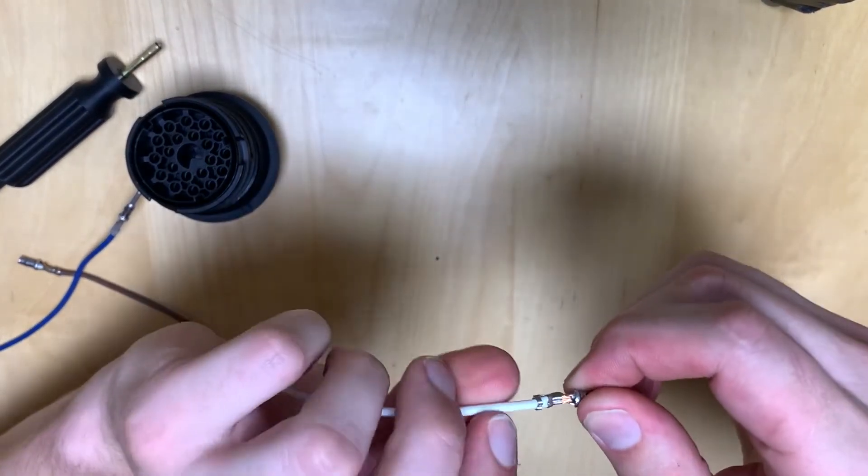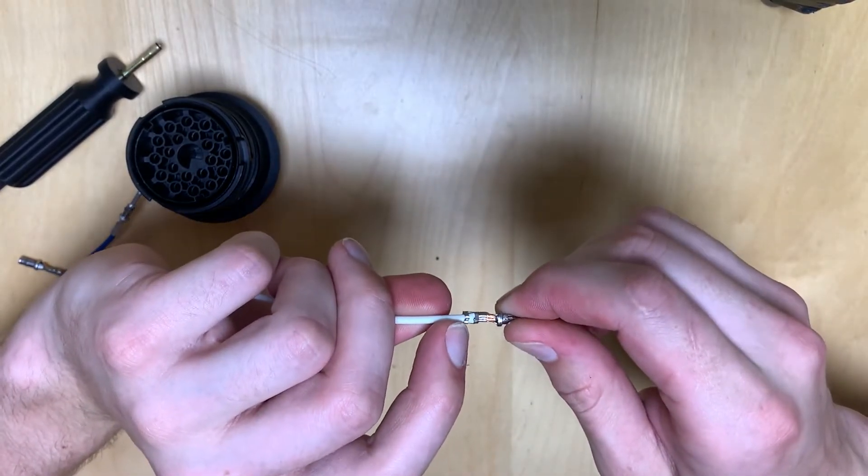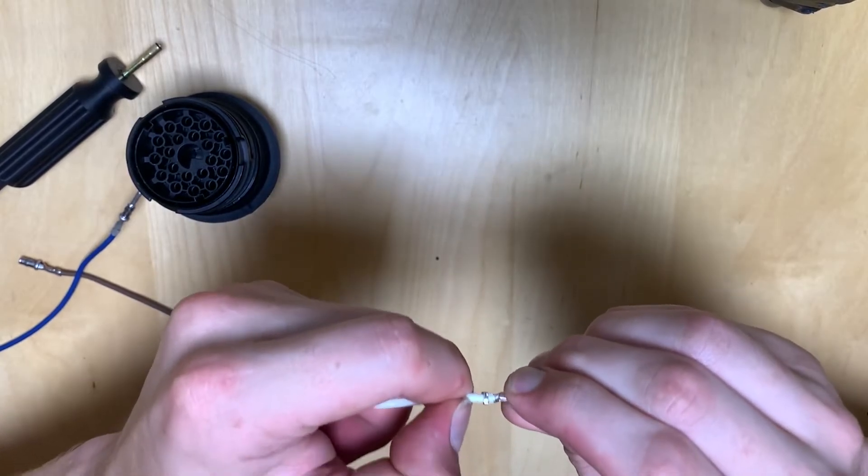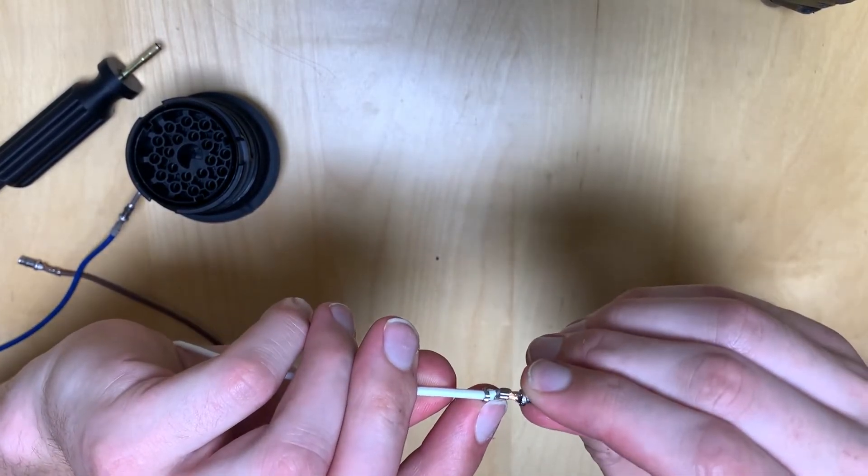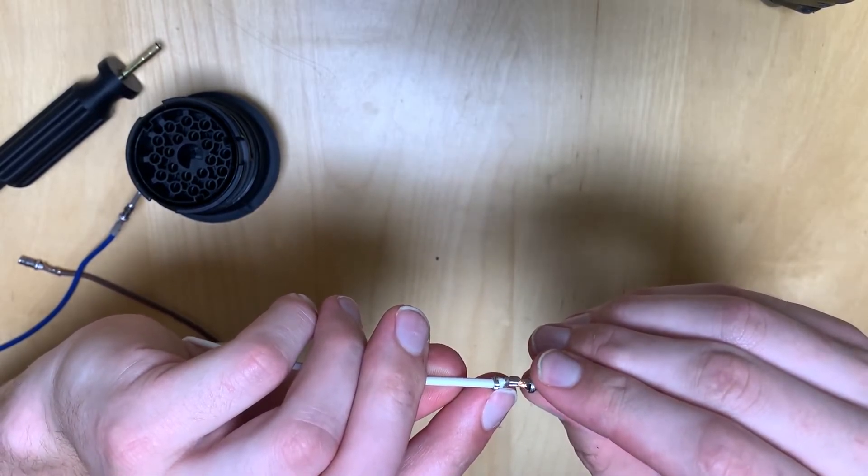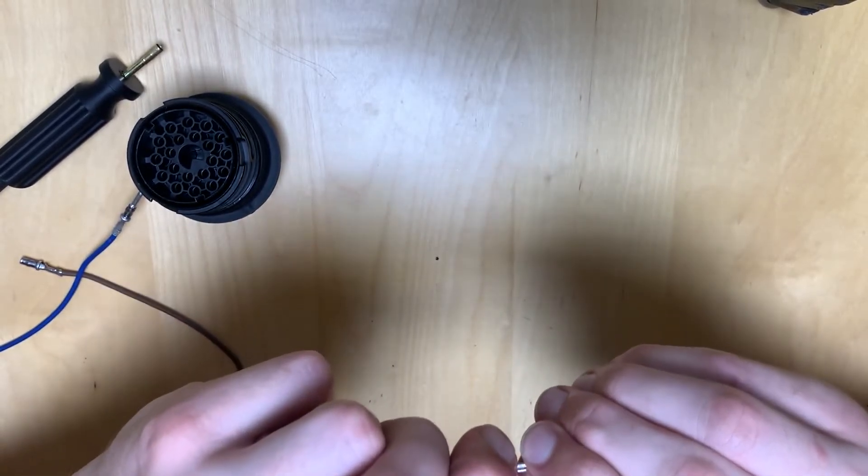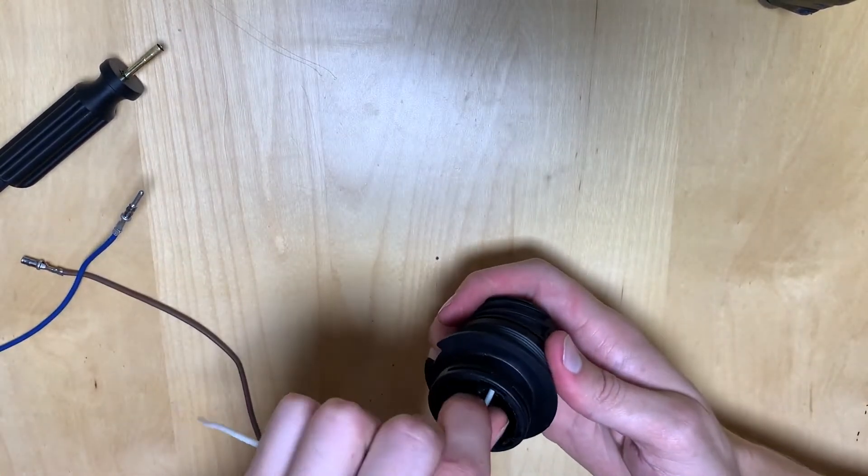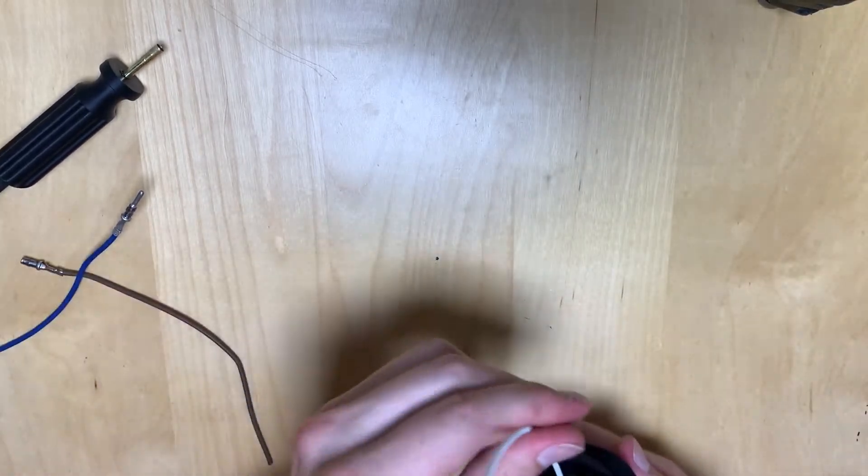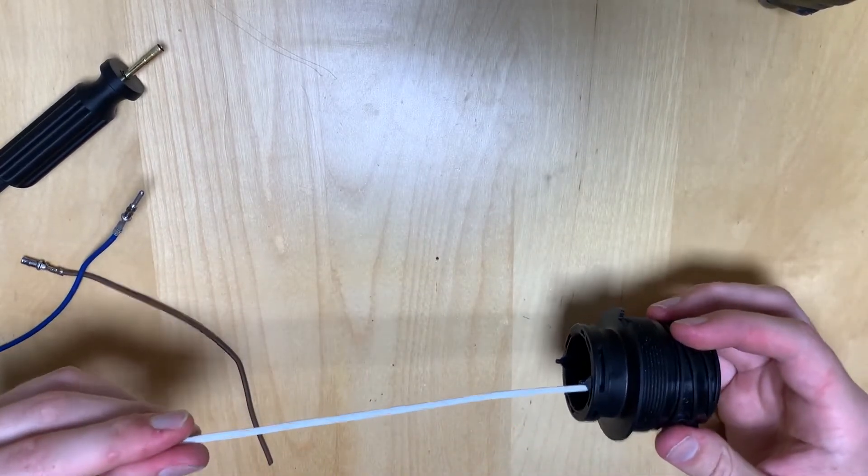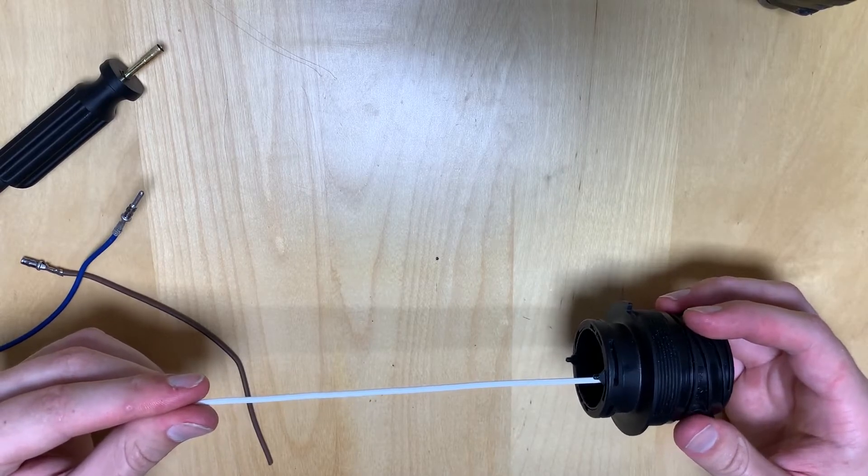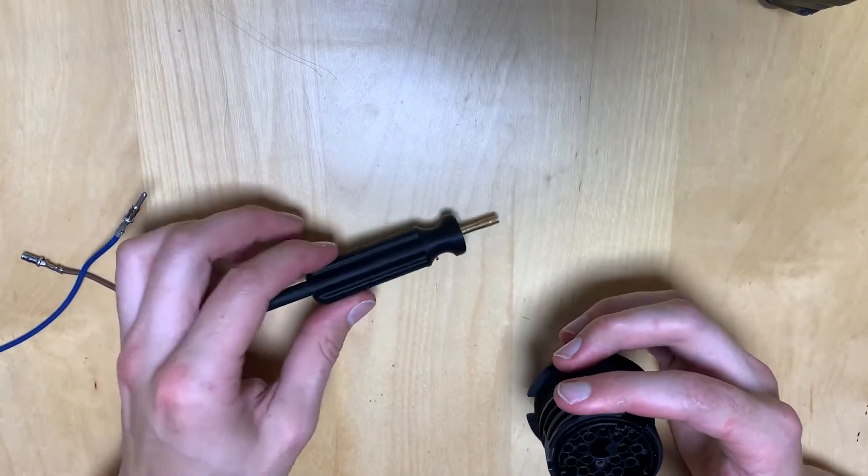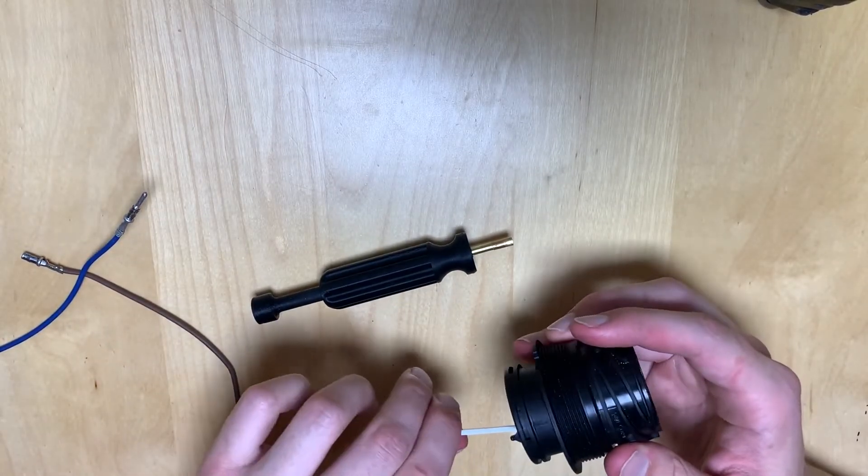You can see the back end of this connector is going to crimp onto the actual insulation material—that provides some stress relief. On the very inside, you can see it's crimping down on the actual bare copper, and that's providing the electrical contact. Then you just put that in there and you're good to go. If you have this tool, wire, and these connectors, you can play with these connectors all day long. You can fix your C191 for corrosion—it's pretty easy to do.